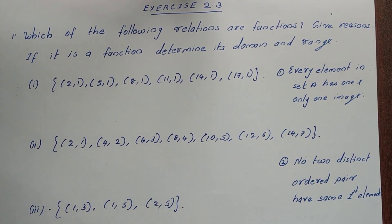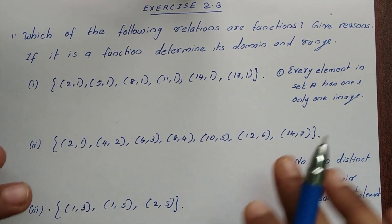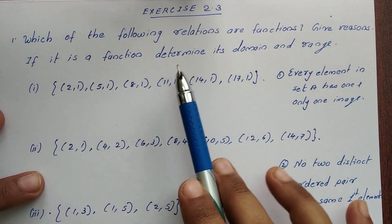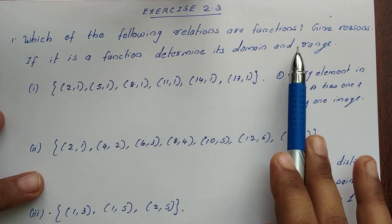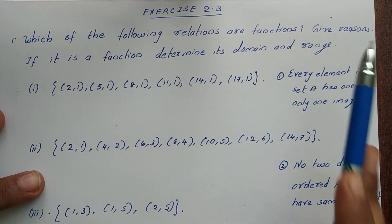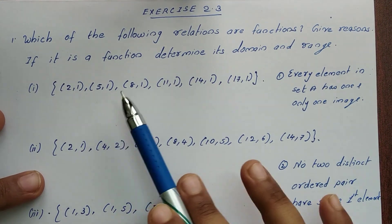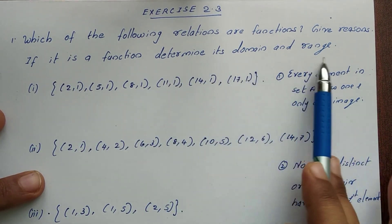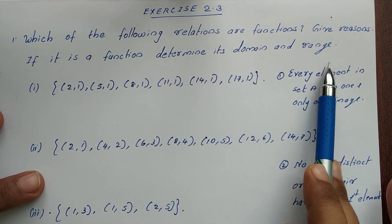We have problems with exercise 2.3. First question: which of the following relations are functions? Give reason. If it is a function, determine its domain and range.